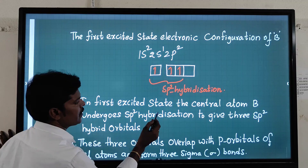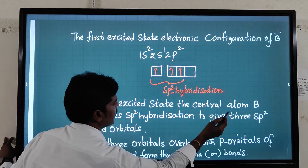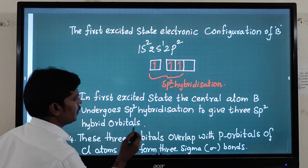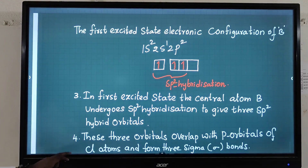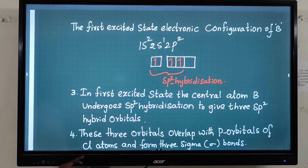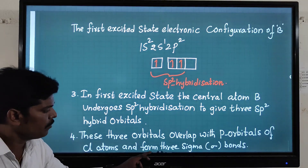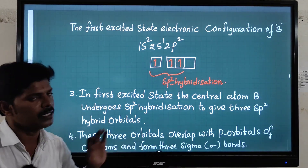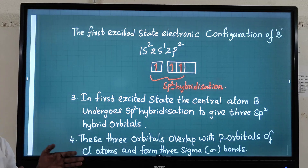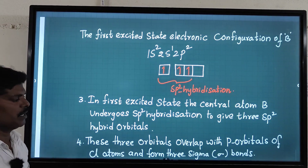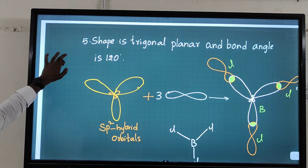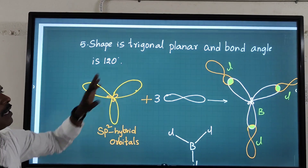In the first excited state, the central atom boron (B) undergoes sp2 hybridization to give three sp2 hybrid orbitals. These three orbitals overlap with three orbitals of the chlorine atoms to form three sigma bonds. Remember: hybrid orbitals always form sigma bonds, never pi bonds.